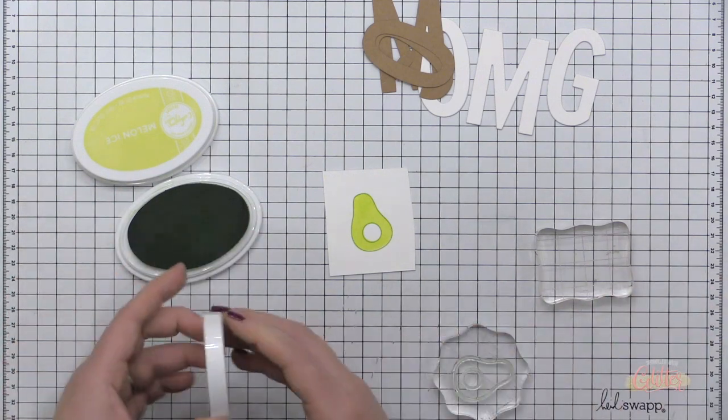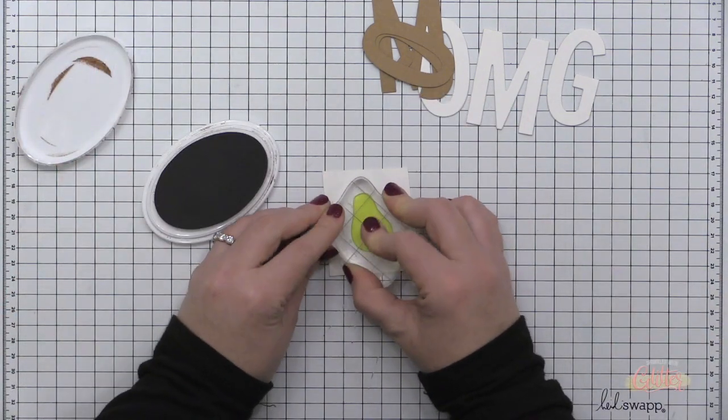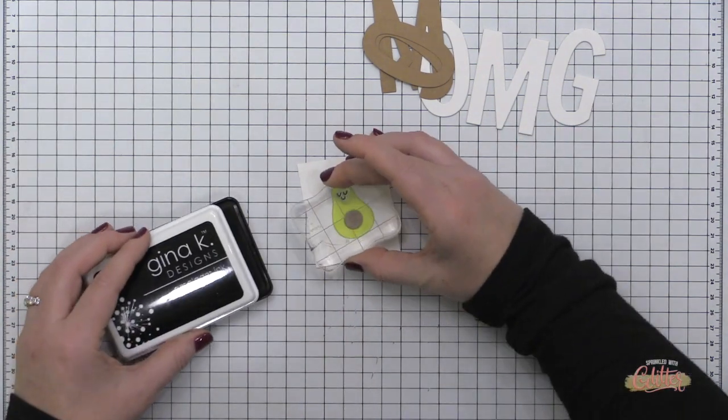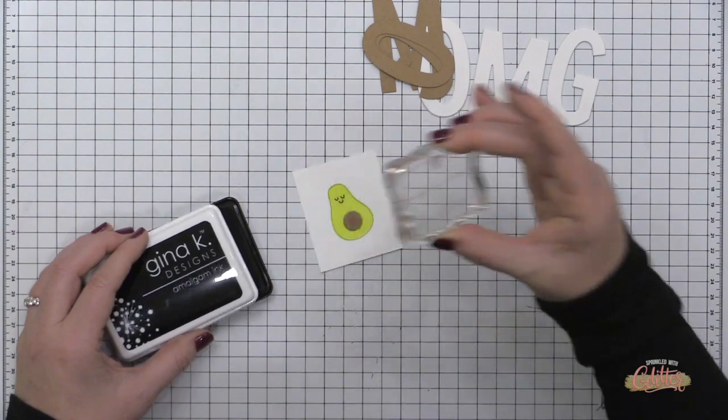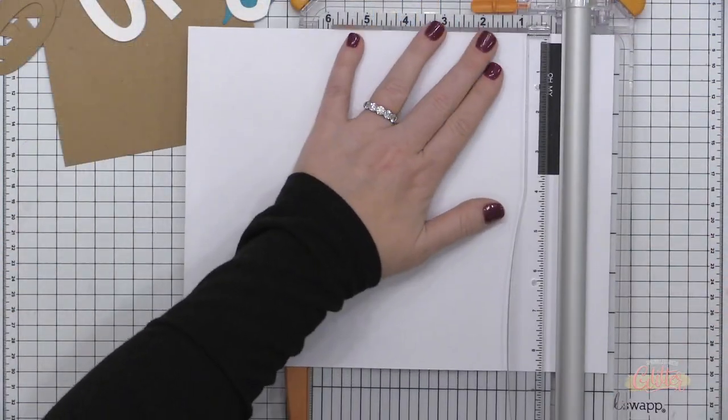And I'm going to work on my little avocado for my grouping. So I'm stamping the solid portion of the avocado in Melon Ice, the outline in Lime Ricky, and the center portion in Over Coffee, and these are all Catherine Pooler inks, and then I stamped the face on my avocado using the Gina K Obsidian Amalgam ink.